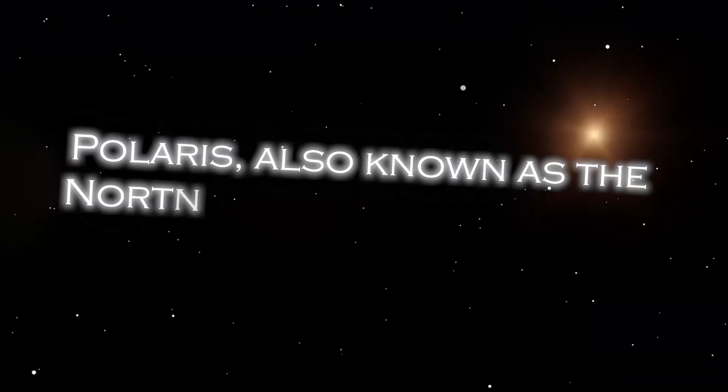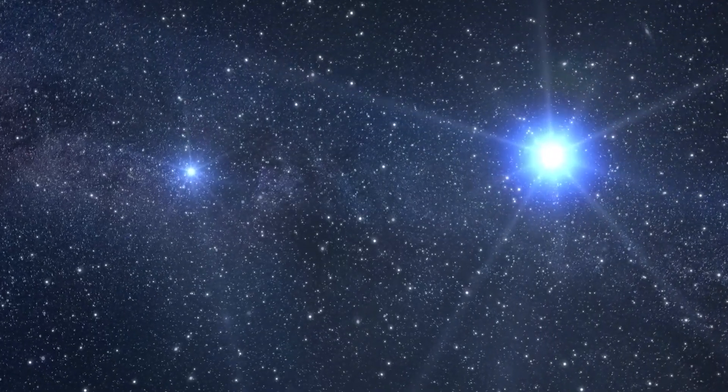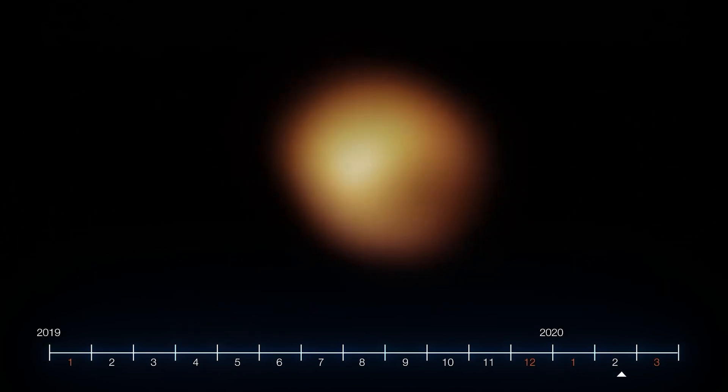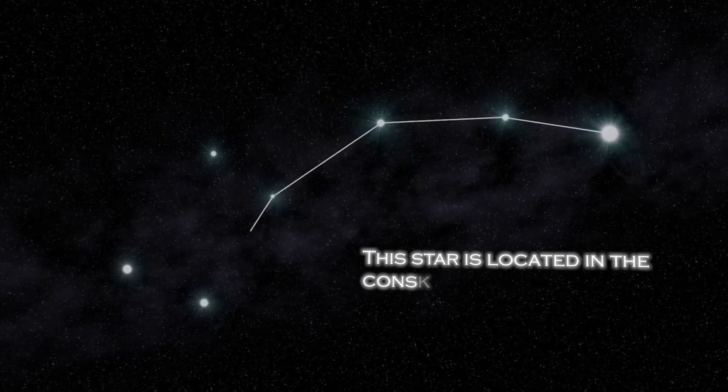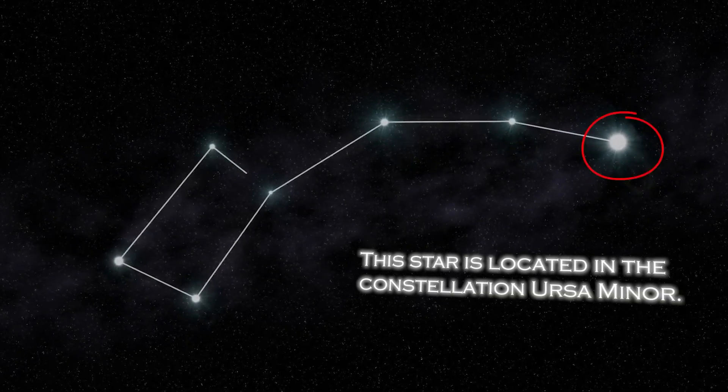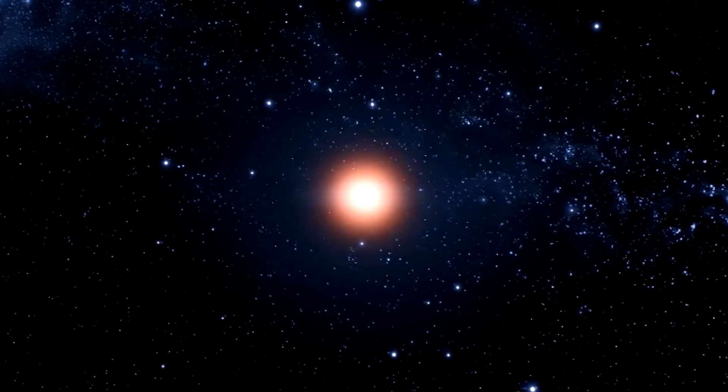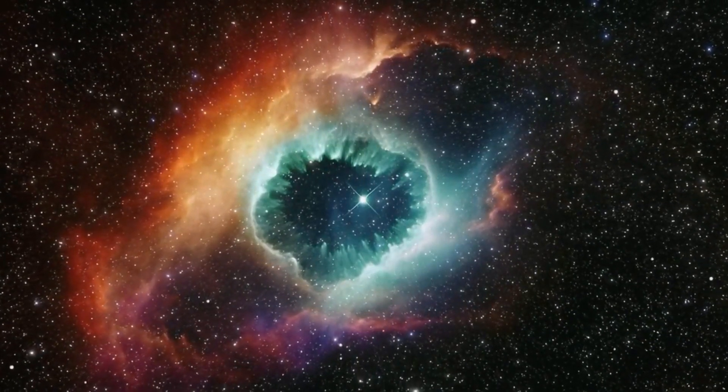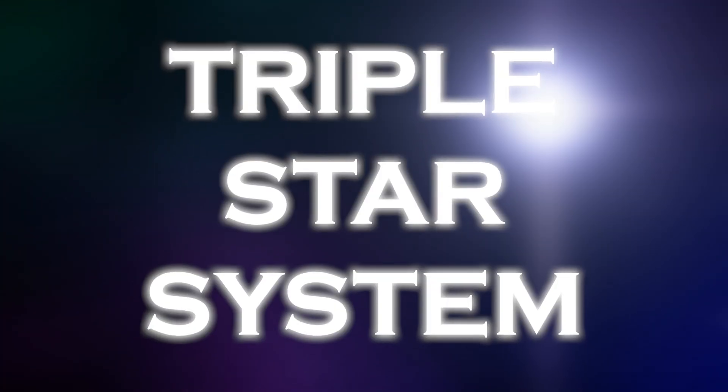Polaris, also known as the North Star, occupies a special position in the sky because of its proximity to the celestial North Pole. It is almost directly over the Earth's North Pole, which gives the illusion that it remains static in the northern sky. The star is located in the constellation Ursa Minor. Polaris is a star of moderate brightness that stands out as a yellow-white supergiant of considerable dimension compared to our Sun. Despite its appearance as a lone star, it is actually part of a rather complex triple star system.